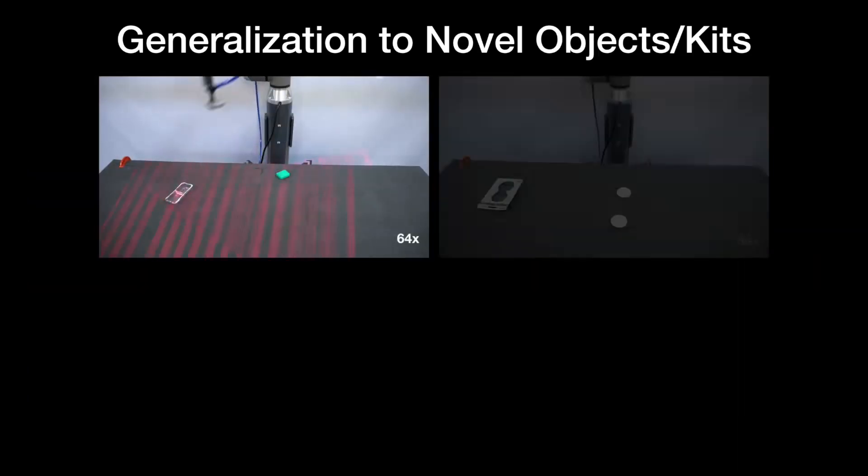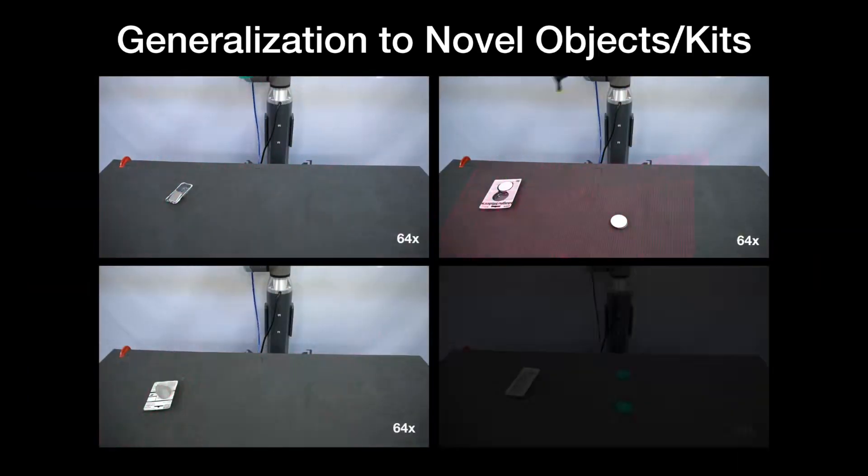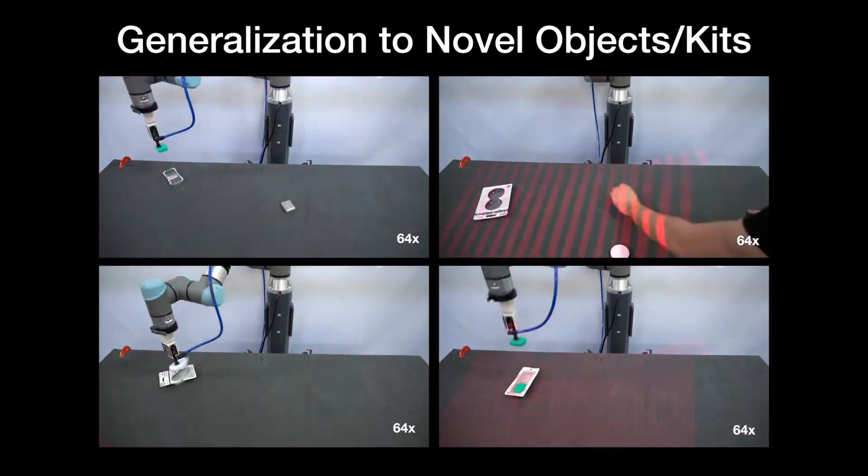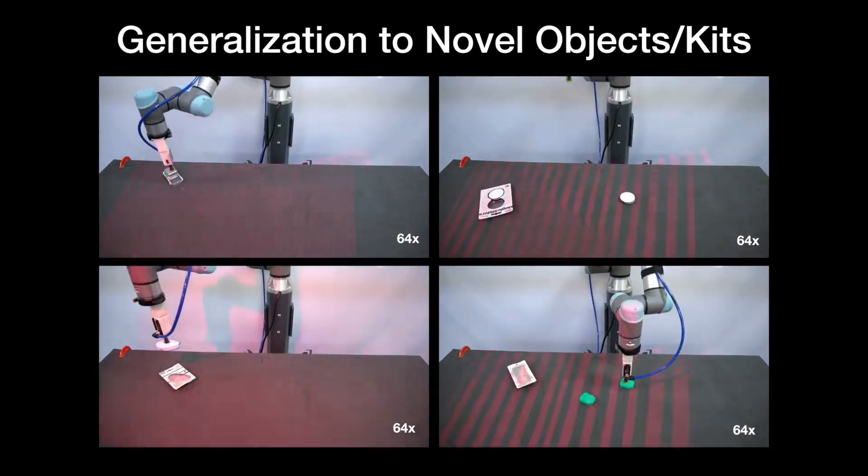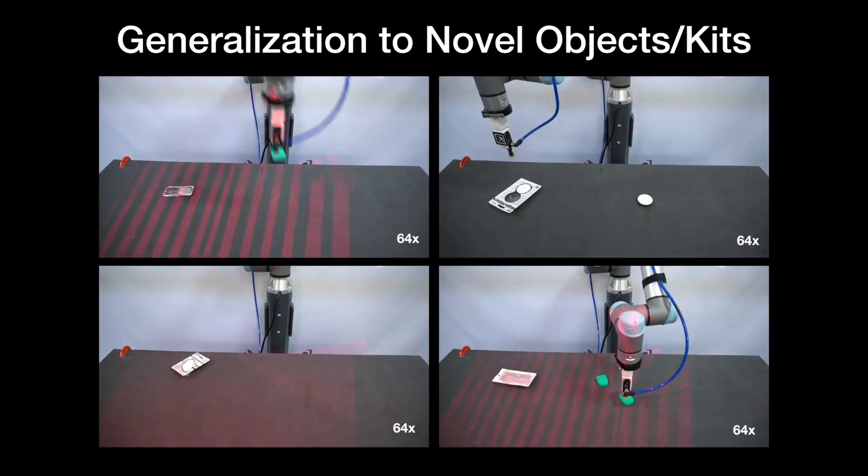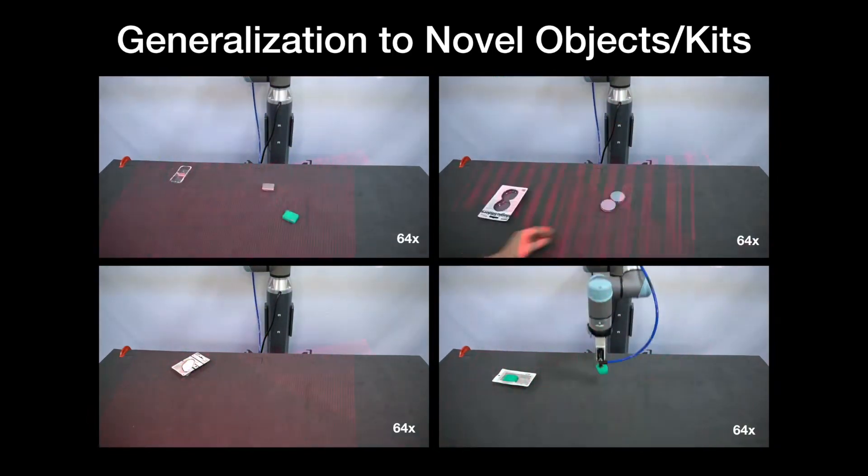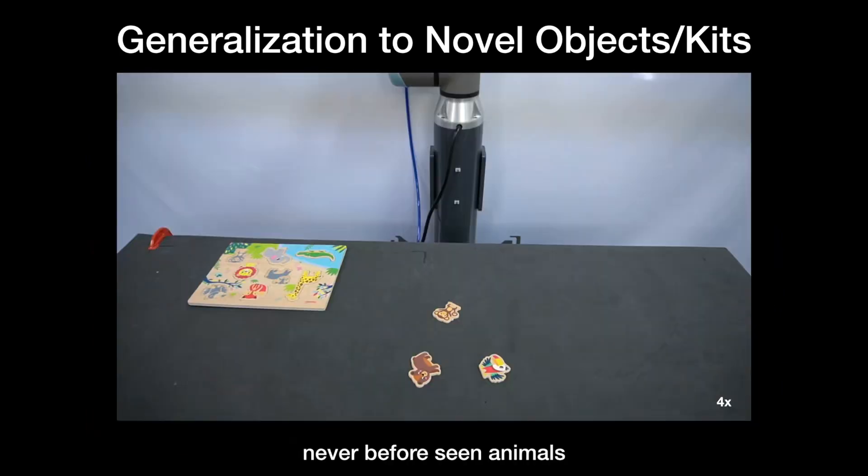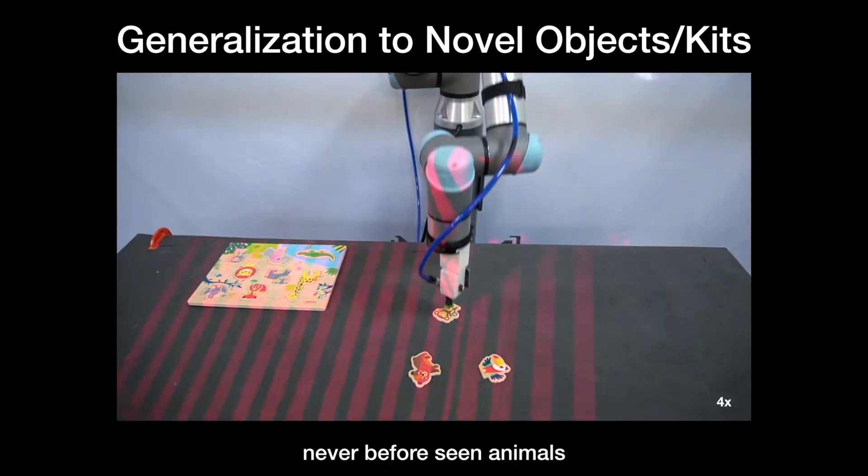Finally, we study how well our system can generalize to novel objects and kits. Here, we show that while our system has never before seen the following single and multi-object kits, it is able to successfully assemble them with a rate exceeding 86%. We even find that a trained policy can assemble novel zoo animals that have been held out from the training set.